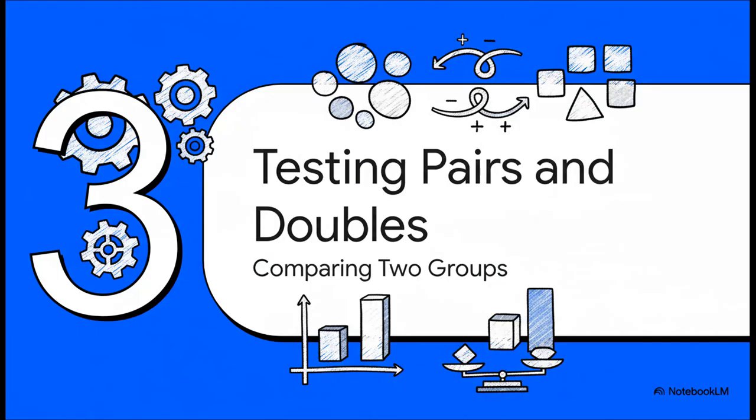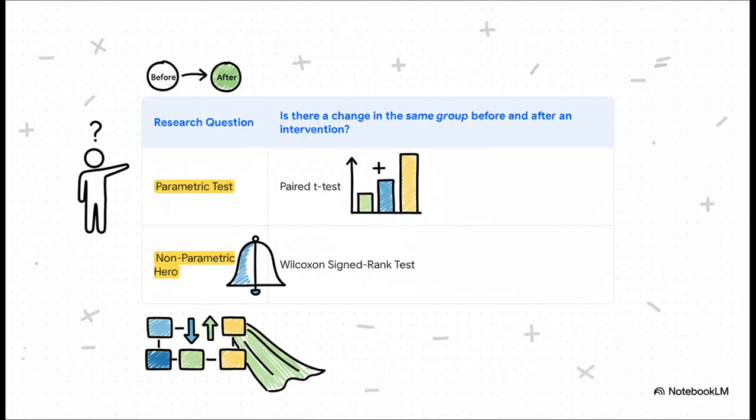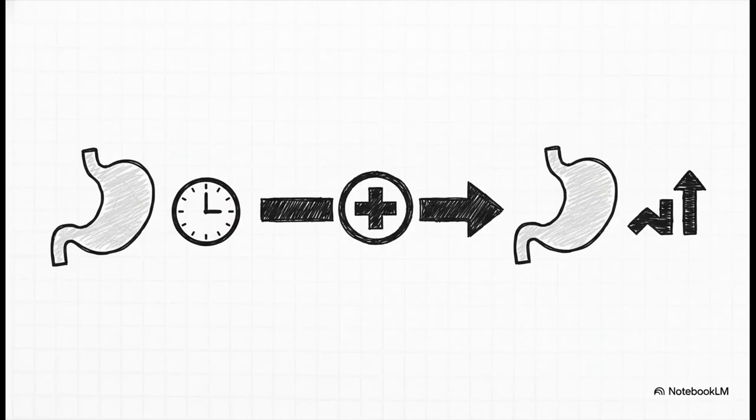All right, let's start building our practical toolkit. Probably the most common thing we do in research is compare two groups. So let's see what non-parametric tools we've got in our box for that. Let's kick things off with that classic before and after study. You measure a group of patients, you give them a treatment, and then you measure them again. Normally, you'd reach for a paired T-test. But what if the amount of improvement, that difference between before and after, doesn't form a nice bell curve?